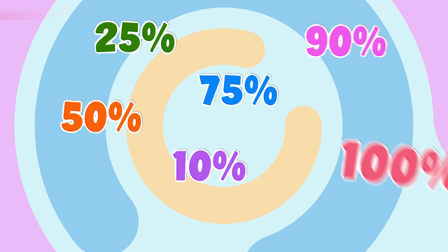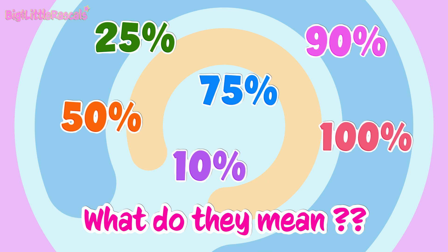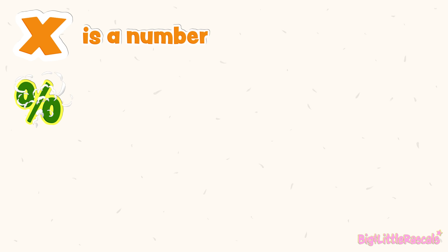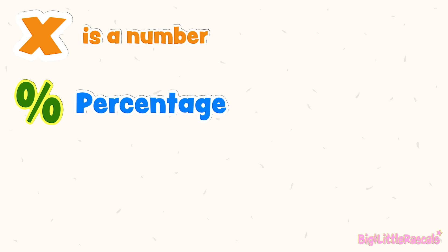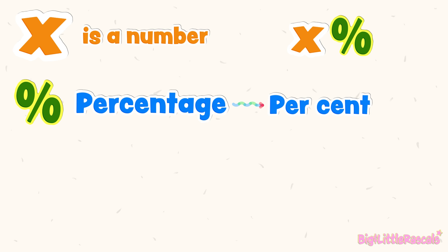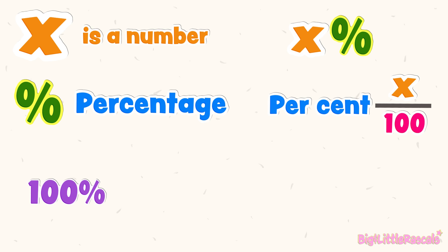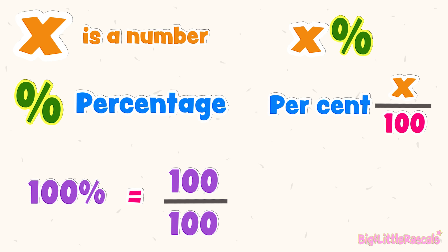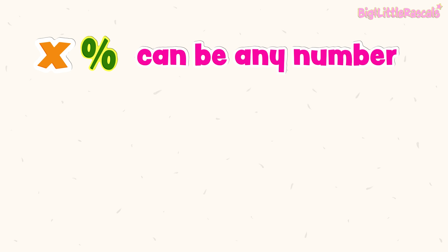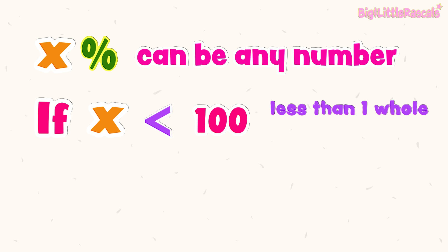Have you seen this kind of numbers before? So, what do they mean? Let's say x is a number. This symbol — percentage — is used to represent percentage. So x% means per cent, which in fraction means x per 100. 100% means 100 out of 100, which is equal to one whole. X can be any number. If x is less than 100, then this shows that it is less than one whole — less than 100%.